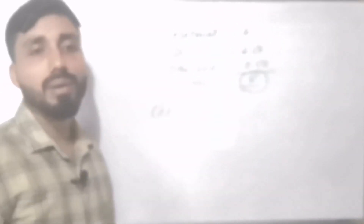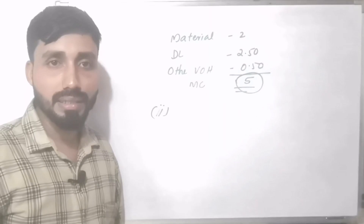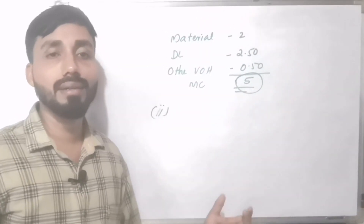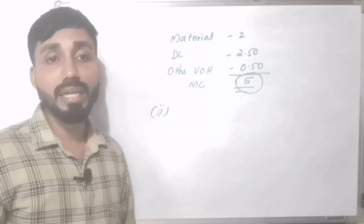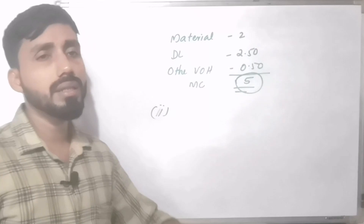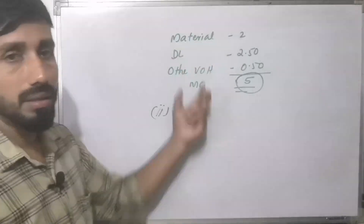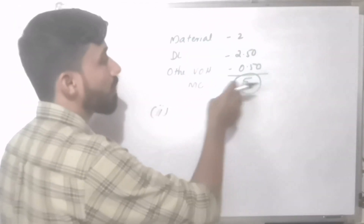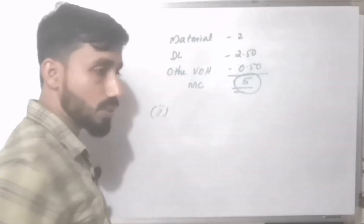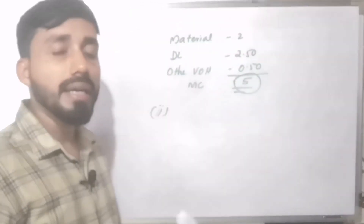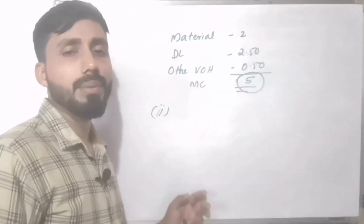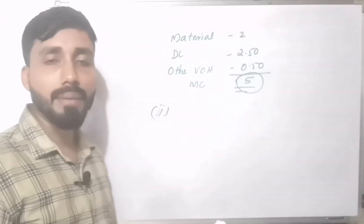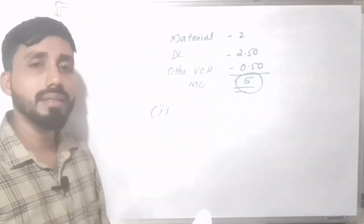If the market price is Rs. 4.60, purchasing from outside is better. We arrive at two conclusions based on the total marginal cost comparison with the outside price. That is the conclusion.